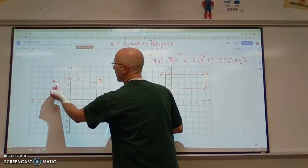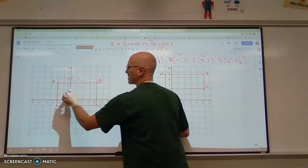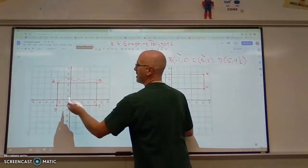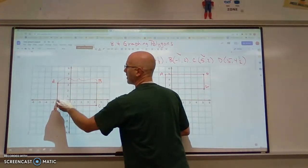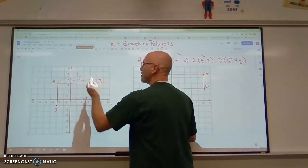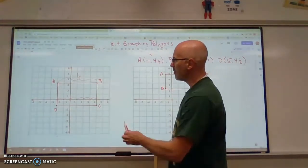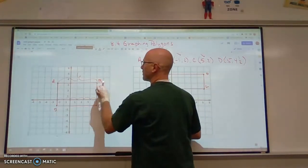We are going to count along or parallel with the horizontal axis, with the x-axis. So we are going to count the number of squares. One, two, three, four, five, six. So that is six units long. We are going from negative two to four.